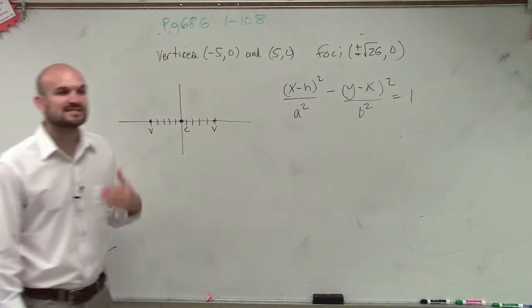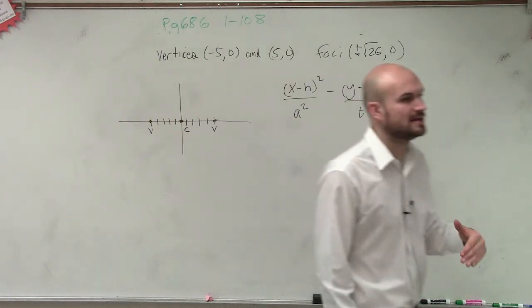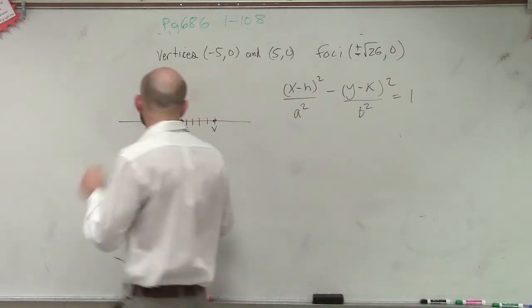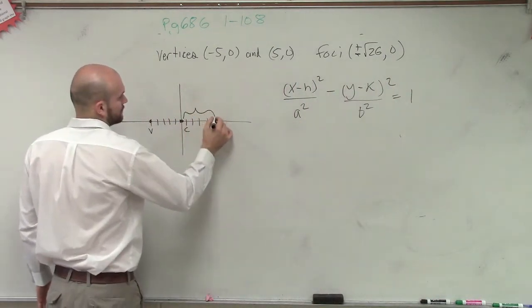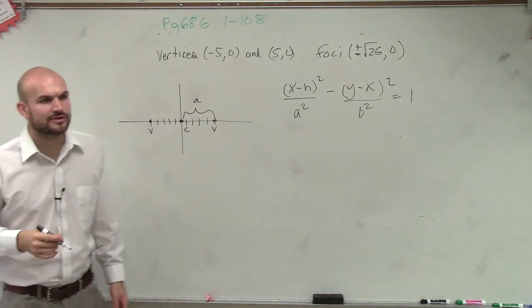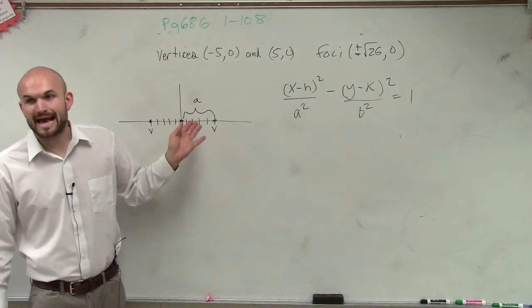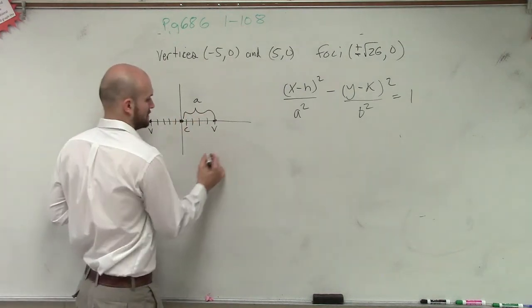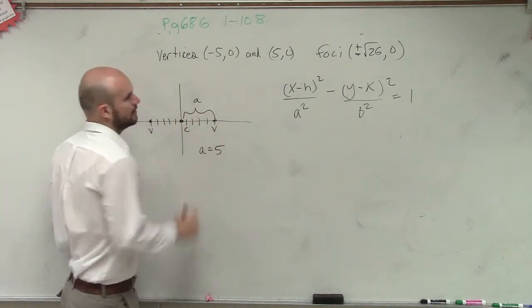And since we now know our center, we can now determine what a and our b are going to be. So our a is going to be that distance, right, from the center to the vertices. So we can say a, in this case, is going to be 1, 2, 3, 4, 5.